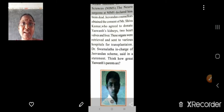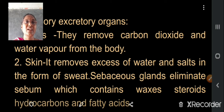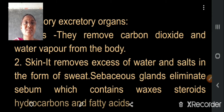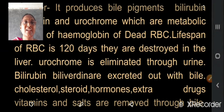Are there any other excretory organs in our body? Yes, there are accessory excretory organs. They are lungs, skin, liver and large intestine. Lungs remove carbon dioxide and water vapour from our body. Skin removes excess of water and salts in the form of sweat. Sebaceous glands eliminate sebum — you feel oily skin in summer season generally. That is the sebum which contains waxes, steroids, hydrocarbons and fatty acids.